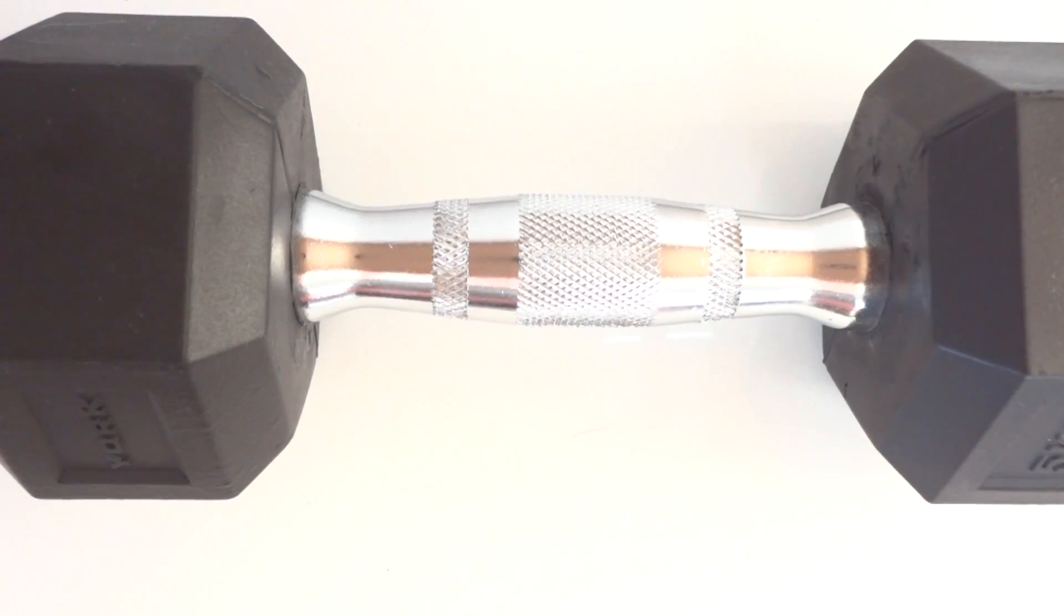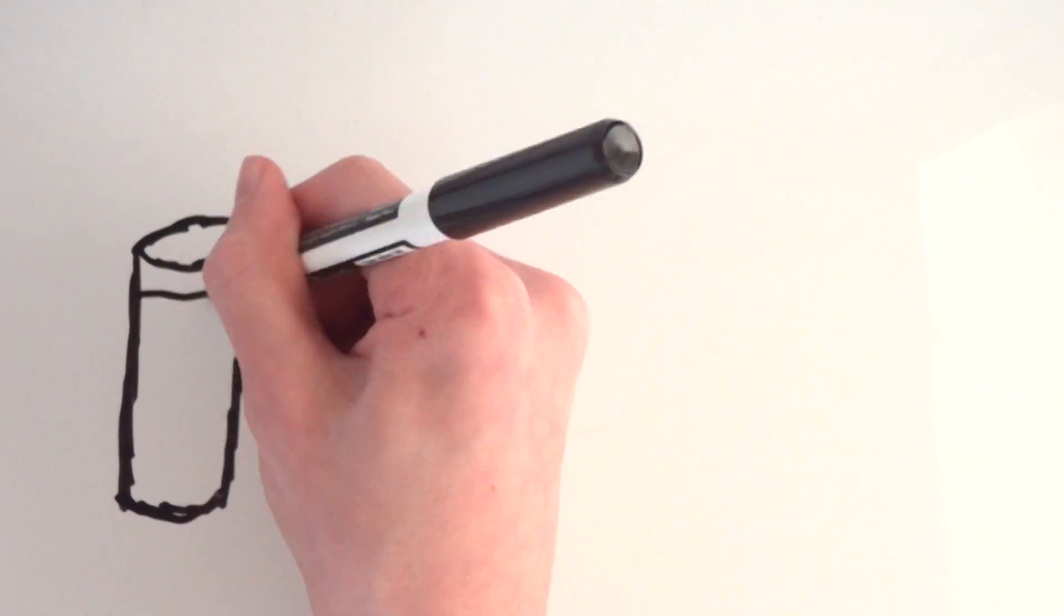A kilogram isn't something which is a constant of nature, but is defined by something physical. Ever since 1889, the kilogram has been defined as the mass of the international prototype kilogram, an object which is made out of 90% platinum.